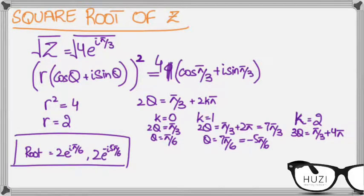However, if you were to extend this for the same example, if you did k equals to 2 for the square root, this would have meant that 2 theta equals 13 upon 3, theta equals 13 pi upon 6.